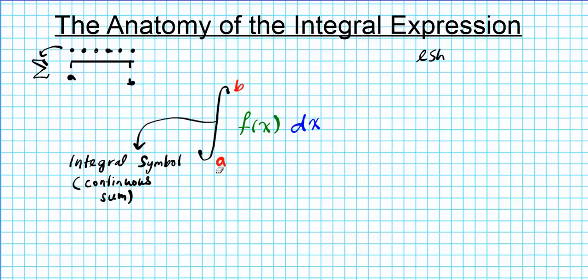Now what does this little a here mean? This little a represents the lower limit of integration. So when you're integrating over an interval let's say from a to b, a represents your starting point. That's where you start summing or accumulating from.